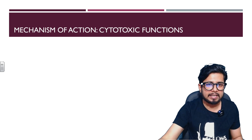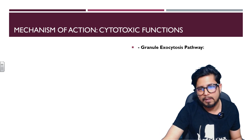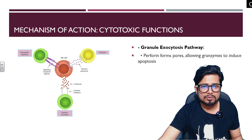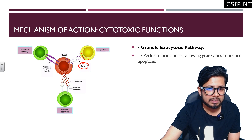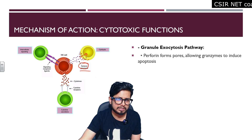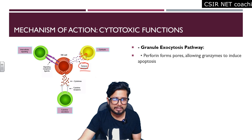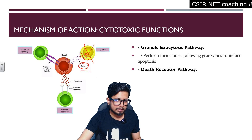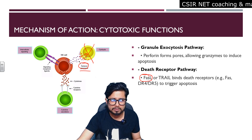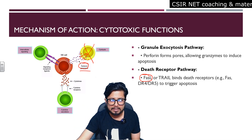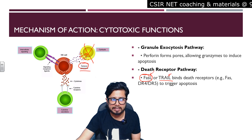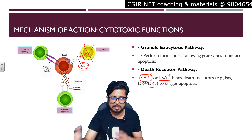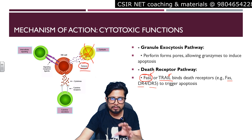For cytotoxic functions, NK cells have granules with exocytosis properties. They release perforins and granzymes together: perforins create pores in the target cell surface, and granzymes enter the cell and degrade important proteins, triggering the apoptosis machinery and ultimately causing cell death. Additionally, there is a death receptor pathway: ligands such as Fas ligand (FasL) or TRAIL ligand bind to receptors — Fas receptor, DR4, or DR5 — on the target cell, triggering the mechanism of apoptosis.